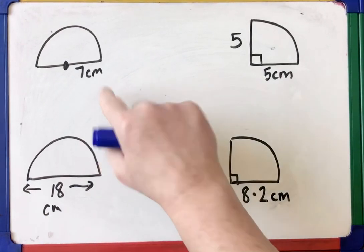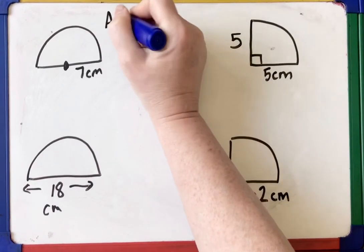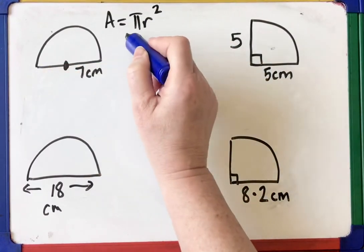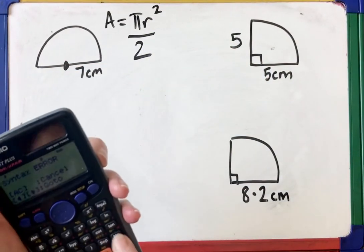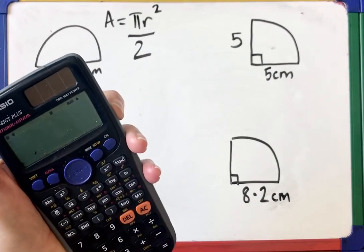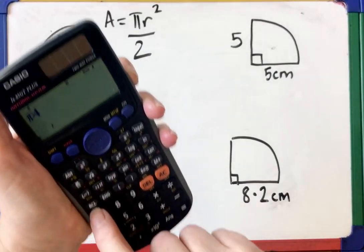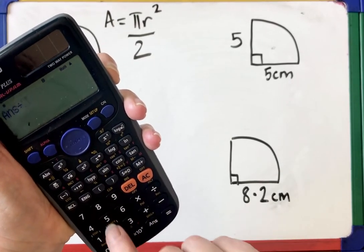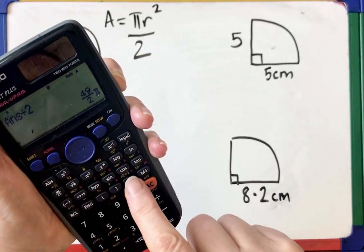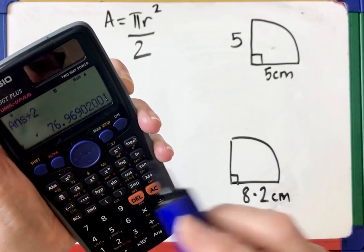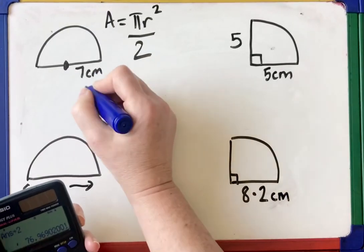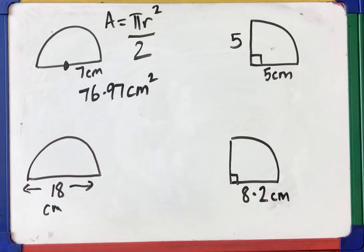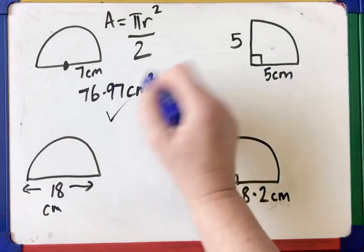For the semicircle with radius 7: area of full circle is pi r squared, so shift pi times 7 times 7 gives 49 pi. Divide by 2 to get 49 pi over 2, which equals 76.97 centimetres squared. Remember the units for area are centimetres squared.